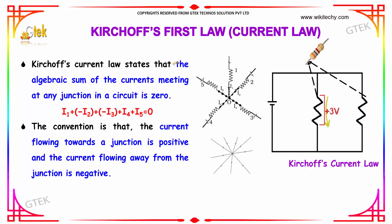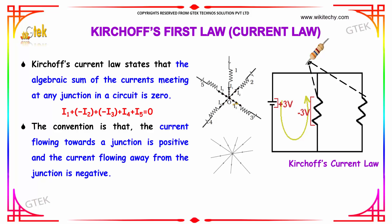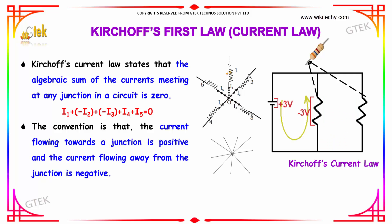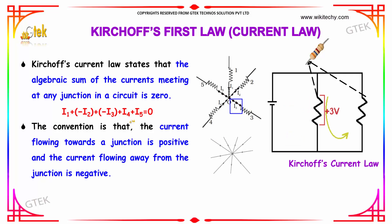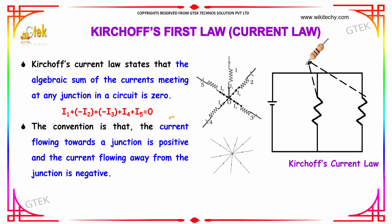What is Kirchhoff's first law? Kirchhoff's current law states that the algebraic sum of the currents meeting at any junction in a circuit is zero. For example: I1 is coming into the junction (positive), I2 is going outside (negative, so −I2), I3 is going out (−I3), I4 is going towards the junction (+I4), and I5 is also going towards (+I5).